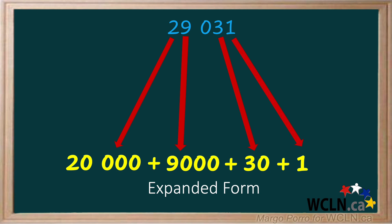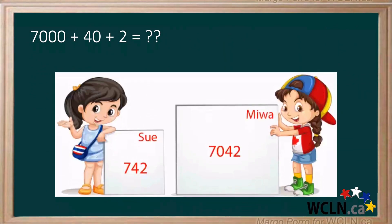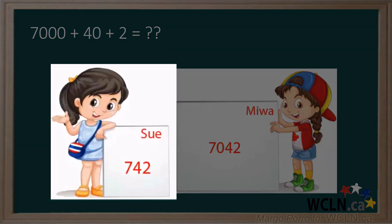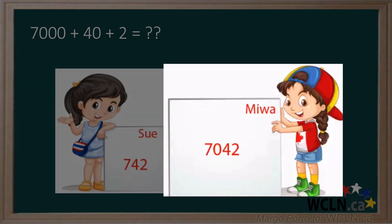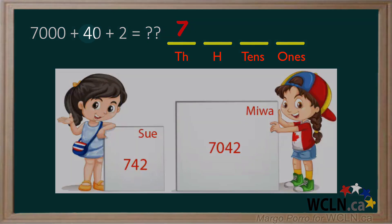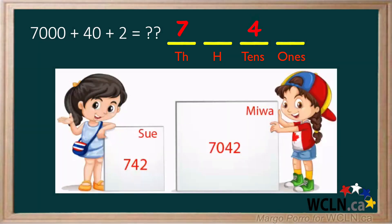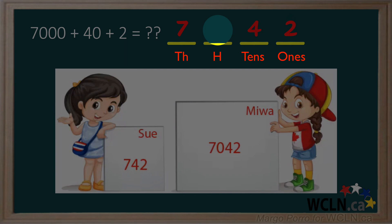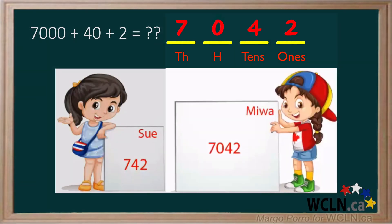Now back to our two friends who are disagreeing about the standard form for 7,000 plus 40 plus 2. Sue says it's 742 and Miwa says it's 7,042. Who is correct? Look for the largest place value — it is 7,000. This tells us that our number in standard form will have four digits: the thousands, hundreds, tens, and ones. The 7 goes into the thousands place — it is the fourth digit from the left and has the greatest value. The 4 stands for 40, or four tens, so it goes into the tens place. The 2 goes into the ones place. You can see that one spot is empty — we need to fill in a zero in the hundreds place. As you can see, Miwa is correct.